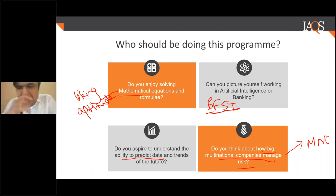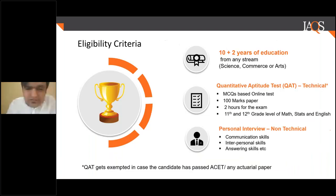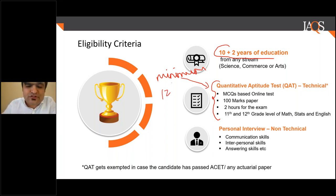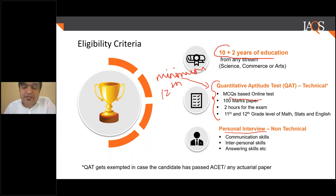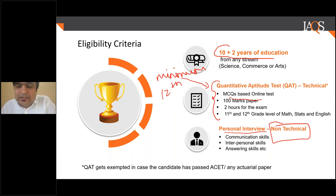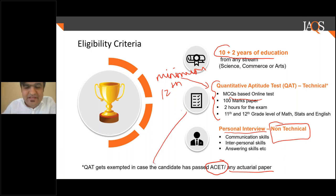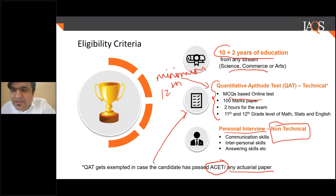Admission is open to 10+2 from any stream. There is a test designed to ensure you have a certain minimum level of math — based on 11th and 12th standard maths — which is an MCQ-based online test you can take at home. After that, there is a non-technical interview to check verbal communication and reasoning skills. If you have cleared any actuarial paper or ASET from the Institute of Actuaries of India, the aptitude test is exempt and only an interview is required.